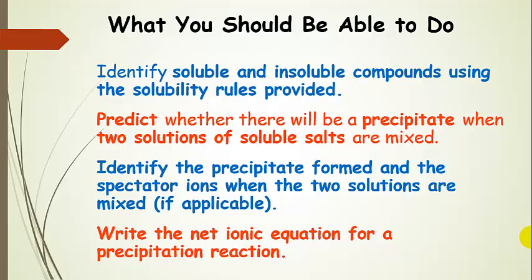So what should you be able to do? You should be able to identify soluble and insoluble compounds using the solubility rules, predict whether a precipitate forms when you mix two solutions of soluble salts, identify any spectator ions, and note when there is no reaction — if no insoluble substance is formed. If you exchange the anions and cations and both new salts are soluble, then we write no reaction.